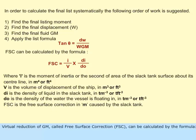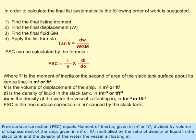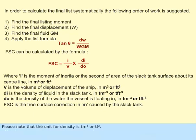Free surface effect: Virtual reduction of GM, called free surface correction (FSC), can be calculated by the formula: FSC equals moment of inertia (in meters to the 4th power or feet to the 4th power) divided by volume of displacement of the ship (in meters cubed or feet cubed), multiplied by the ratio of density of liquid in the slack tank to the density of the water the vessel is floating in. The unit for density is T/m³ or T/ft³. FSC is in meters or feet caused by the slack tank.